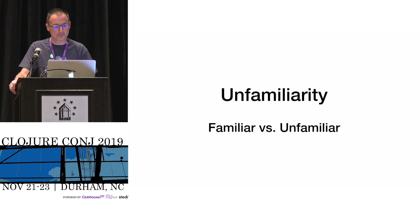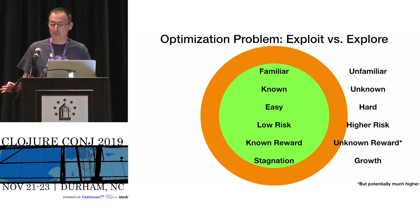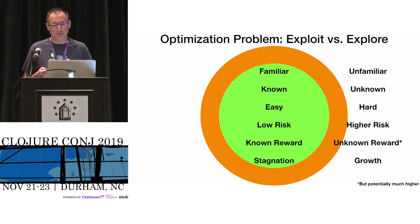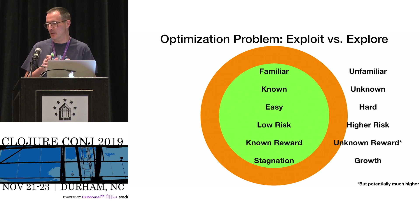Our first horseman is unfamiliarity — this idea of knowing or not knowing something. The most interesting thing about this horseman is that it's not a technical problem and does not have a technical solution. It's really an optimization problem about how I spend my time. Borrowing from machine learning, it's a balance between whether I exploit or explore. I can spend time using known strategies to exploit things I already know for an expected reward — this is easy and familiar.